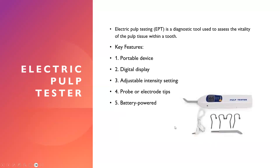The electric pulp tester is a diagnostic tool used to assess the vitality of the pulp tissue within a tooth. Its key features include: it is a portable device with a digital display, adjustable intensity settings for the current passed, a probe or electrode tip, and it is battery powered and easily rechargeable. There is also a lip clip which is applied to the patient to complete the circuit.